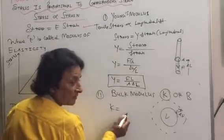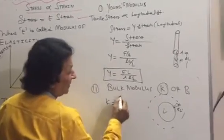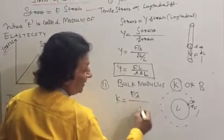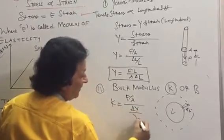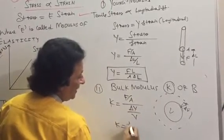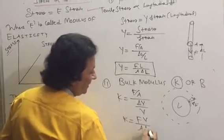That is K or B. Which stress? Volumetric stress. That is F upon A divided by delta V upon V. So K equals FV upon A delta V.